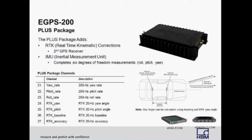The GPS 200 plus package provides all the channels of the base model, plus IMU (inertial measurement unit) and RTK (real-time kinematic) measurements. The IMU option improves acceleration accuracy and completes the six degrees of freedom measurement by adding axis rotation — roll, pitch, and yaw. The real-time kinematic option uses readings from two GPS antennas to output high-accuracy yaw, pitch, and slip angle measurements. The eGPS 200 directly measures yaw and pitch at any time, while slip angle calculations require the vehicle to be in motion. Visit www.hbm.com for a dedicated webinar on the eGPS 200.